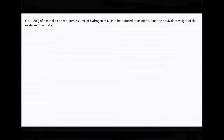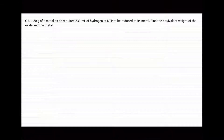Question 5. 1.80 grams of a metal oxide required 833 milliliters of hydrogen at NTP to be reduced to its metal. Find the equivalent weight of the oxide and the metal.